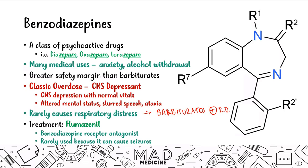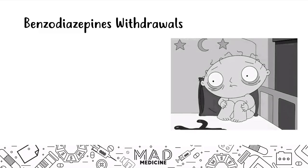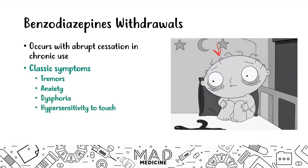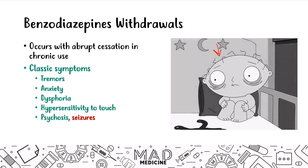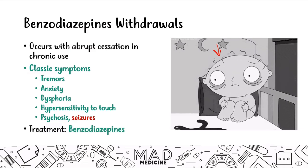In real life, flumazenil isn't commonly given because it can cause seizures. When it comes to benzodiazepine withdrawal from abrupt cessation in chronic users, classic symptoms include tremors, anxiety — since benzos treat anxiety, taking them away can bring it back — dysphoria, hypersensitivity to touch, psychosis, and seizures. The treatment for benzo withdrawal is benzodiazepines themselves, tapered off slowly.